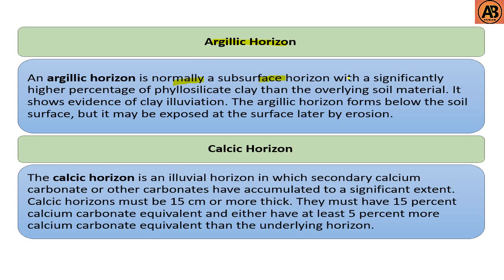The next one is the argillic horizon. The argillic horizon is normally a subsurface horizon with a significantly higher percentage of phyllosilicate clay than the overlying soil material. It shows evidence of clay eluviation. The argillic horizon forms below the soil surface but may be exposed at the surface later by erosion.